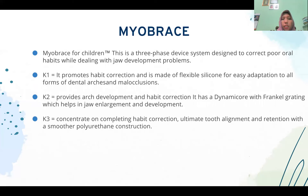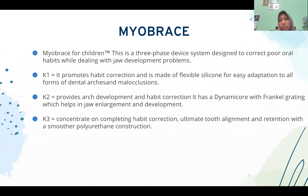Myobrace for children consists of three systems. K1 is the first system designed to correct oral habits while addressing child development problems. It promotes habit correction and is made of flexible silicone for easy adaptation to all forms of dental arches and occlusions. K2 provides arch development and habit correction, featuring a dynamic core with frontal grating to help with arch enlargement and development. K3 concentrates on completing habit correction, ultimate tooth alignment, and retention, with a smarter polyurethane construction.